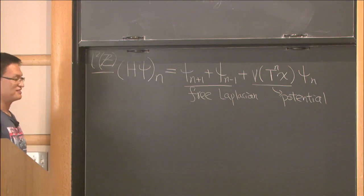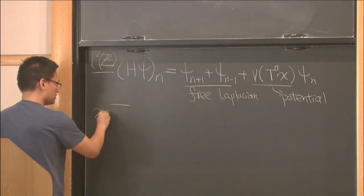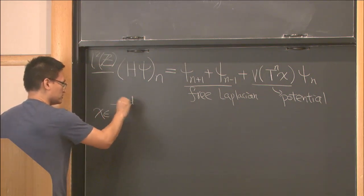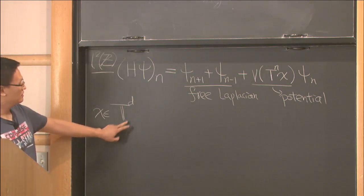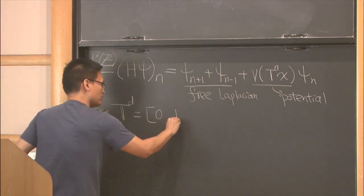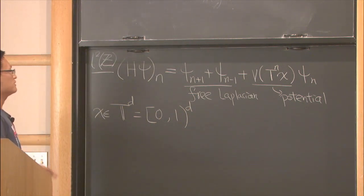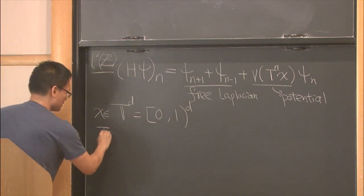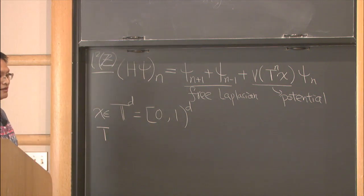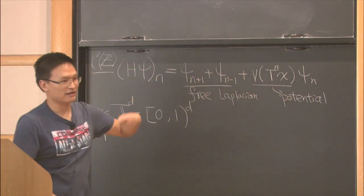What is T^n x? We'll consider x in a d-dimensional torus. This means the torus which is [0,1] torus, higher dimensional. And this T will be a map that x on the torus. So we are evaluating this function along the orbit of this x.